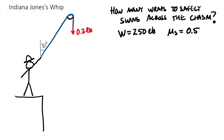Let's specify the parameters. Harrison Ford, fully laden with treasure, has a weight of 250 pounds — that's the tension he needs at his hand to safely cross. The static friction coefficient mu sub S equals 0.5, and the weight of the whip hanging over the top is 0.2 pounds, so that tension T equals 0.2 pounds.